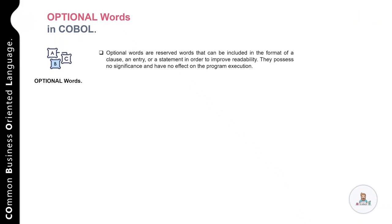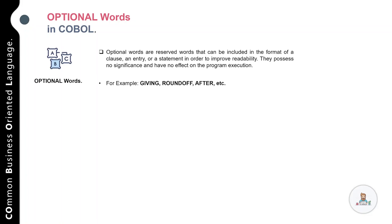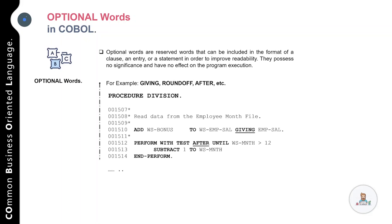Now let's talk about optional words in COBOL. Optional words are reserved words that can be included in the format of a clause, entry, or statement to improve the readability of the code. They have no effect on the execution of the program. Examples of optional words include GIVING, ROUNDED, AFTER, and many more. For instance, in the statement 'ADD BONUS TO EMPLOYEE-SALARY GIVING EMP-SAL', the word GIVING is an optional word. Similarly, in a PERFORM statement, AFTER is an optional keyword used purely for readability.